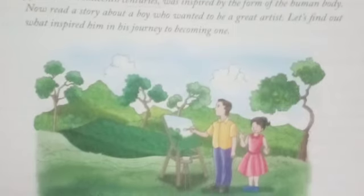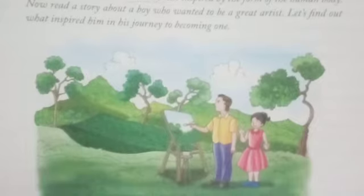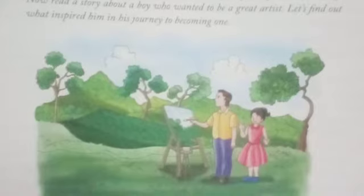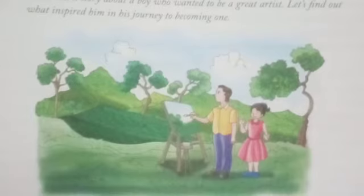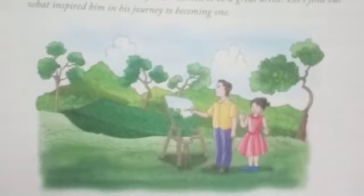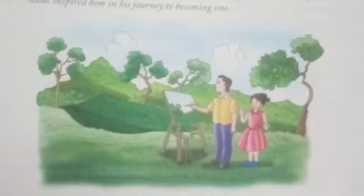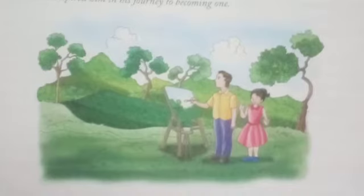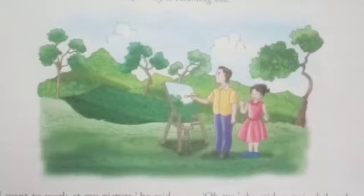He said, 'I want to work at my picture,' and went into the field. The little sister went too, and stood by him watching while he painted. So the boy is telling here, 'I want to work my picture.' He went outside into the field; his sister also went with him. She stood with her brother, watching while her brother painted.